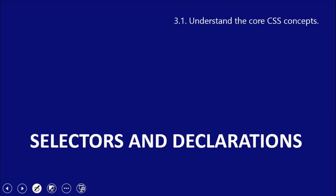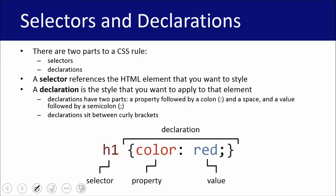So let's go ahead and get started and dive a little bit deeper into selectors and declarations. There are two different parts of a CSS rule. You have a selector — which could be H1, it could be P, it could be any element that you want styled on a page — or you could use IDs or classes. We'll talk a little bit more about that in a second, but a selector is going to be...